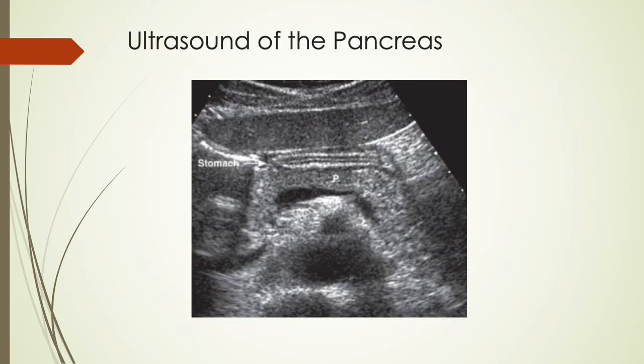When doing an ultrasound of the pancreas, it's important to remember all of the structures that surround it. Because of its location, a lot of the pancreas can and does get obstructed — the head lies in the C-loop of the duodenum, gas and ultrasound are not friends, the stomach lies anterior to the pancreatic body, and the tail can go quite deep. When you first start scanning the pancreas, I recommend breaking it up into different parts and making sure you've done everything you can to view all individual areas.